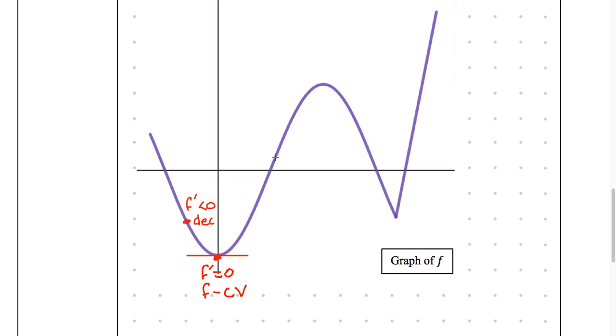What about right here? F prime is greater than zero. Therefore, it is increasing. So it's F increasing. What about right here? What do we have? F prime is doing what? FCV. Critical value.